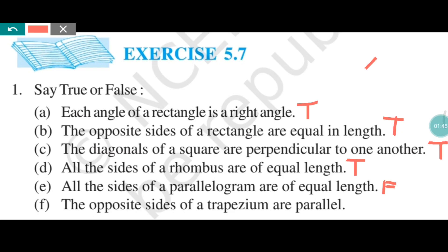Part F: all the opposite sides of a trapezium are parallel. Only one pair of opposite sides of a trapezium are parallel, so if that condition is not met it will be false. So the last two statements will be false, and the first four will be true.